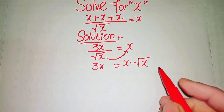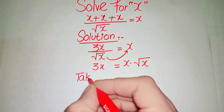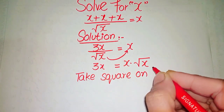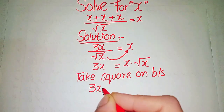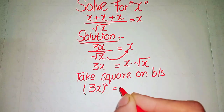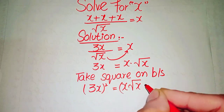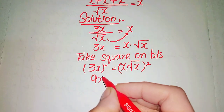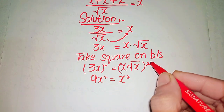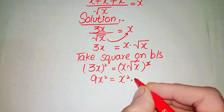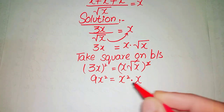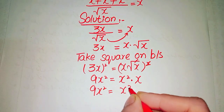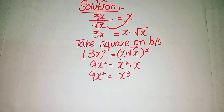To remove the square root, we take the square on both sides of the equation. So 3x whole squared equals x times square root of x whole squared. This gives us 9x squared equals x squared times x, since the square cancels with the square root.